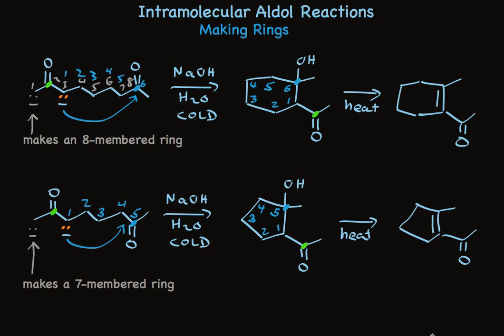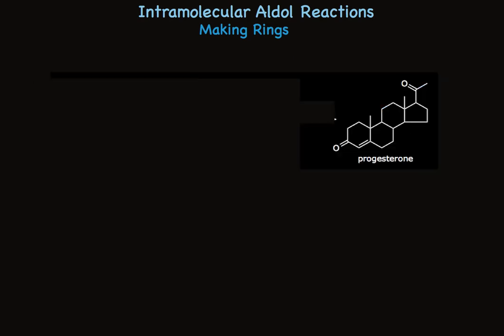So you might wonder how useful this is really. Well, it's used a lot. And one of the interesting applications is that it completes a well-known synthesis of a steroid, progesterone. Progesterone and progesterone analogs are components in the contraceptive pill. Steroids have the 6-6-6-5 cyclic pattern, with a variety of substitutions, and every stereogenic center has very well-defined stereochemistry. The part of the molecule to focus on is this lower left ring, which is an alpha-beta unsaturated ketone. Professor Johnson at Stanford recognized that this ketone could come from an intramolecular aldol.